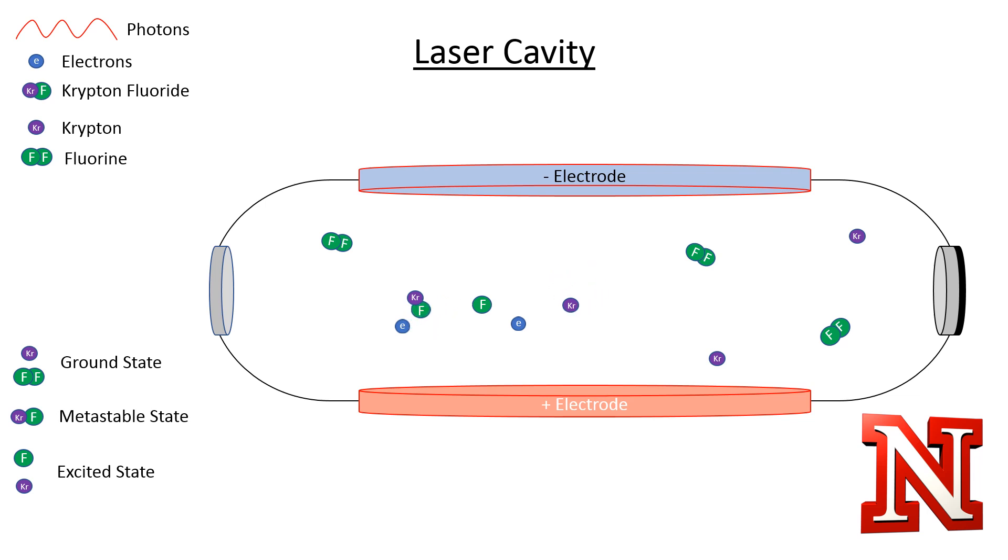The molecules are now in their excited state. This makes the krypton and fluorine combine and create a molecule. This would be the metastable state in our previous example for general lasers.